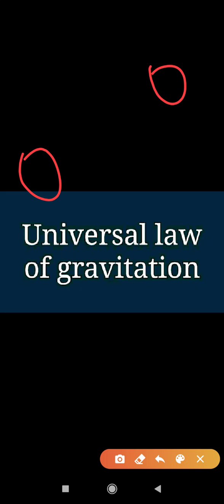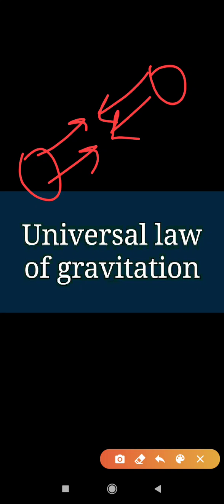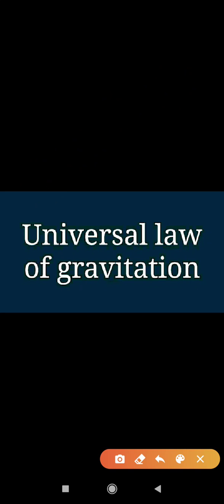If we consider any two bodies of the universe, this law means one force will work between both bodies. This force is only an attractive force, and this attractive force is known as gravitational force. So this gravitational force is working on each and every object in the universe.